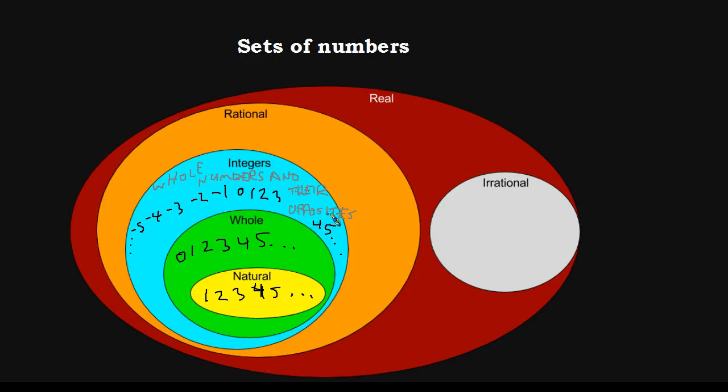So integers are whole numbers and their opposites. And this is kind of a good definition to add to your list of definitions. The word opposite specifically means if you're talking about positive 3, the opposite of it is negative 3. And if you're talking about negative 4, the opposite of it is positive 4. Opposite means same number, different sign.